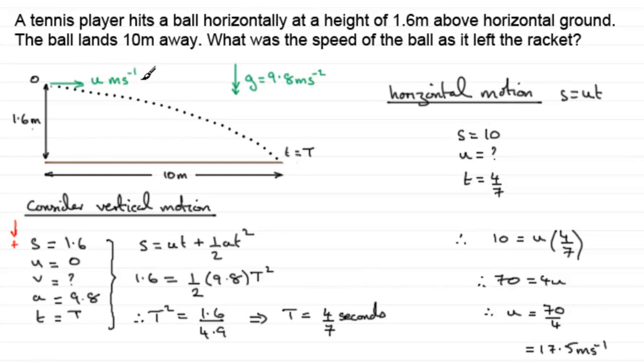So all you've got to remember then, with horizontal projection initially, there is no vertical component of velocity. It is essentially zero. And hopefully you should be able to see your way through these problems.